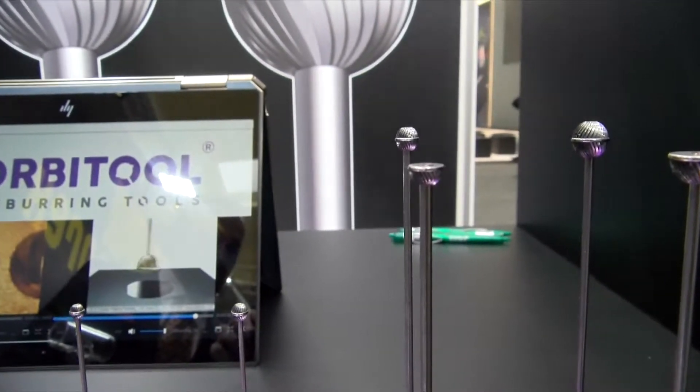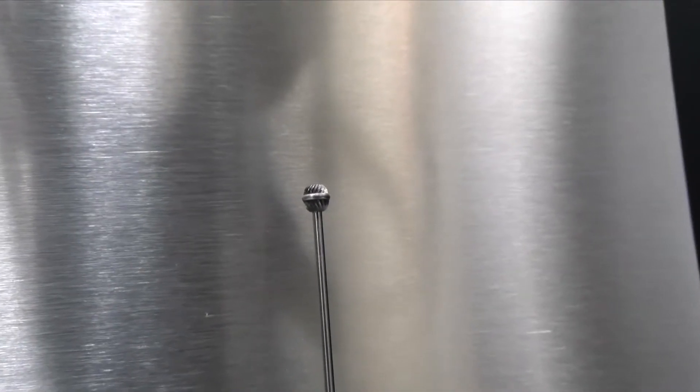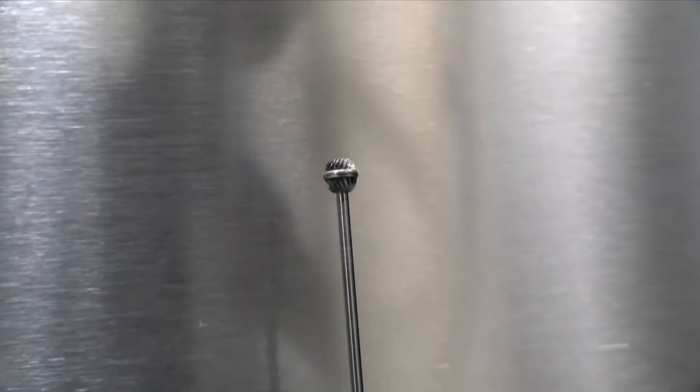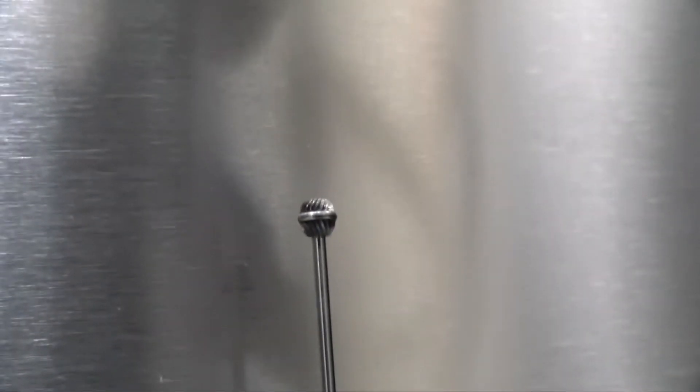Sometimes you have cross-type intersection where you're drilling all the way through a bore, maybe through a tube. Now you're generating two internal edges that need to be deburred, and that's where we use the double hemisphere tool.